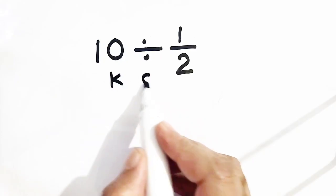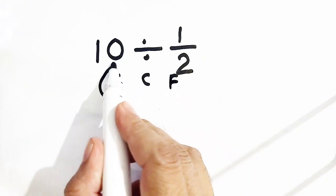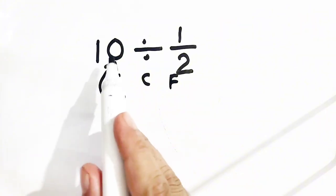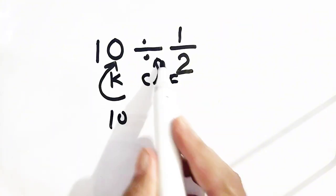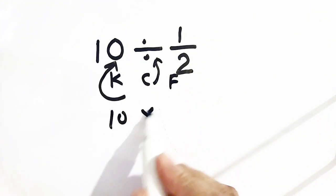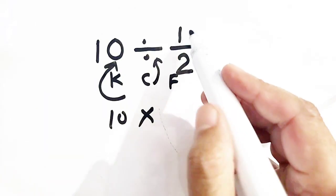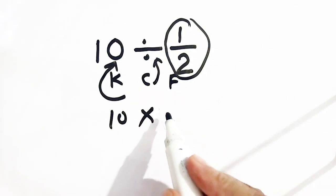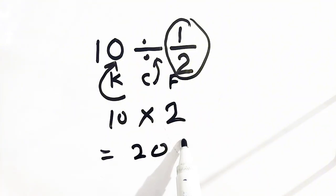What is KCF? K means keep it — the first number is kept as itself. C means change it — divide is changed into multiplication. And F means flip it — 1 by 2 is flipped, so it becomes 2. So our answer will be equal to 10 times 2, which is 20.